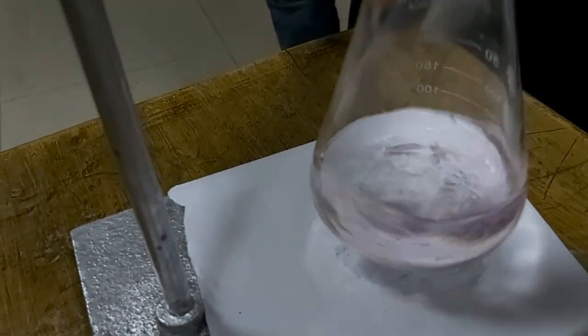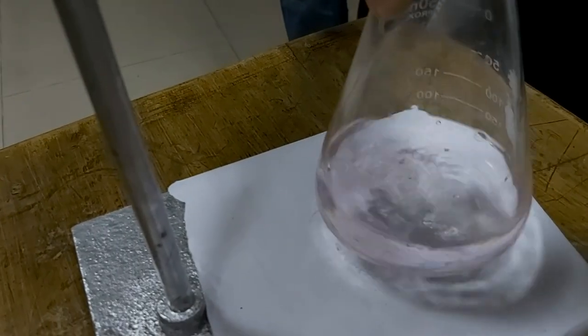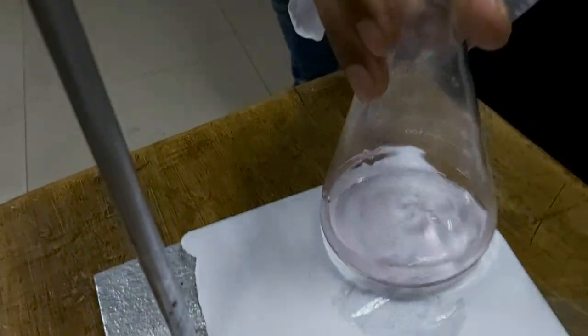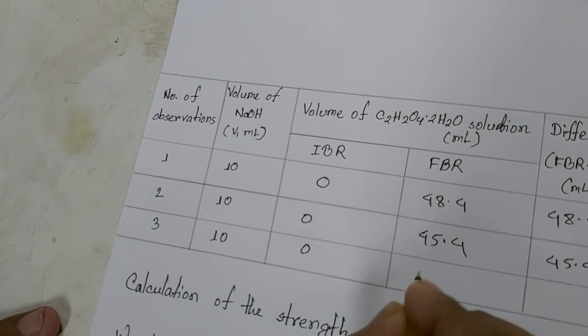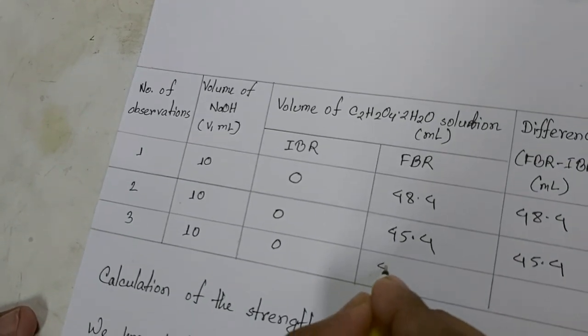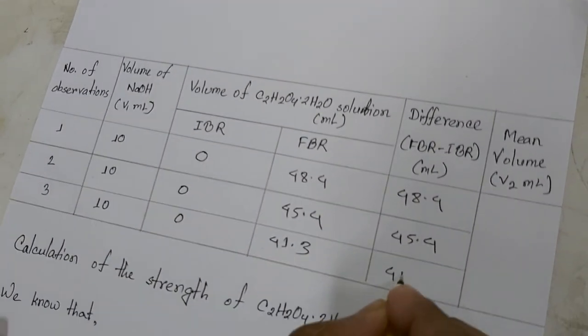We have almost reached the equivalence point. This is the endpoint. The volume is 41.3. The initial volume was zero, so the difference is 41.3.